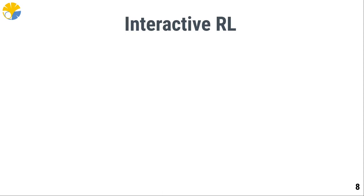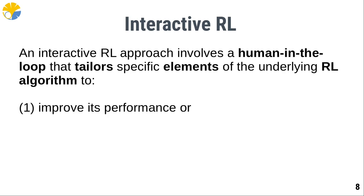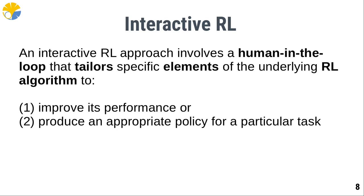On the other hand, an interactive RL approach involves a human-in-the-loop that tailors specific elements of the underlying RL algorithm to either improve its performance or produce an appropriate policy for a particular task. In the first option, human feedback is used for finding an optimal policy faster compared to not using any human feedback. The second option focuses on the agent alignment problem — aligning the agent's behavior with the user's intentions, such as creating a bot for Mario that kills all the enemies.